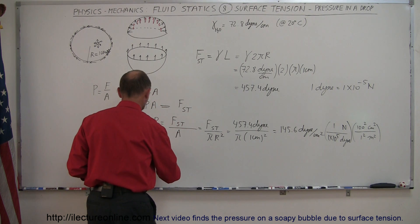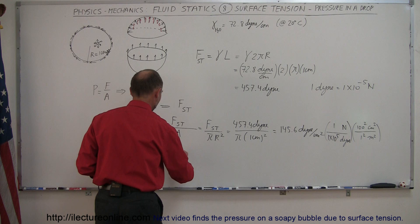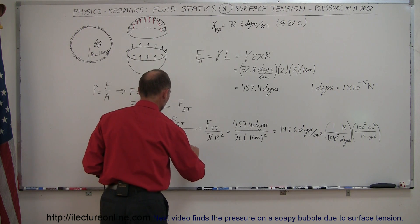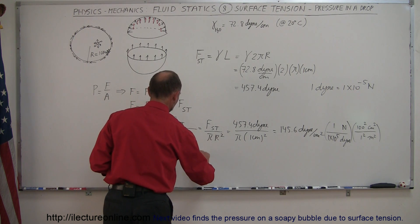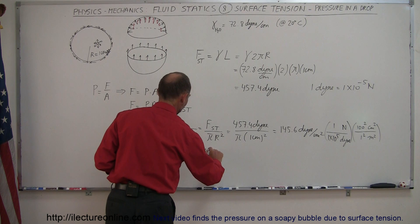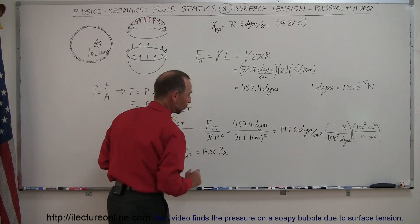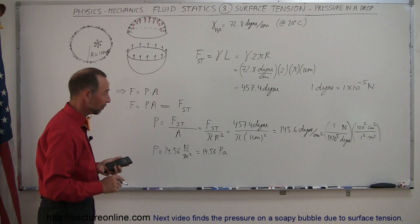So the pressure then is equal to 14.56 newtons per square meter, and that would be 14.56 pascals, that's the units of newtons per square meter, or pressure.